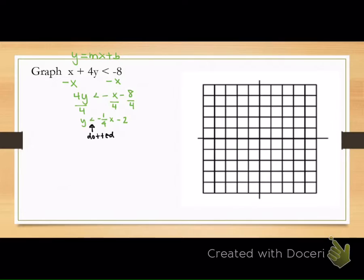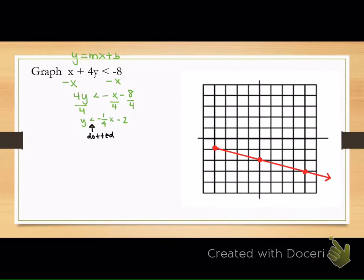Start at negative 2 on the y-axis, then go down 1 and to the right 1, making a negative slope. Connect the points with a dotted line. Mine won't show as dotted right away, but I'll make it dotted in a second. Ignore the fact that it's not dotted right now.